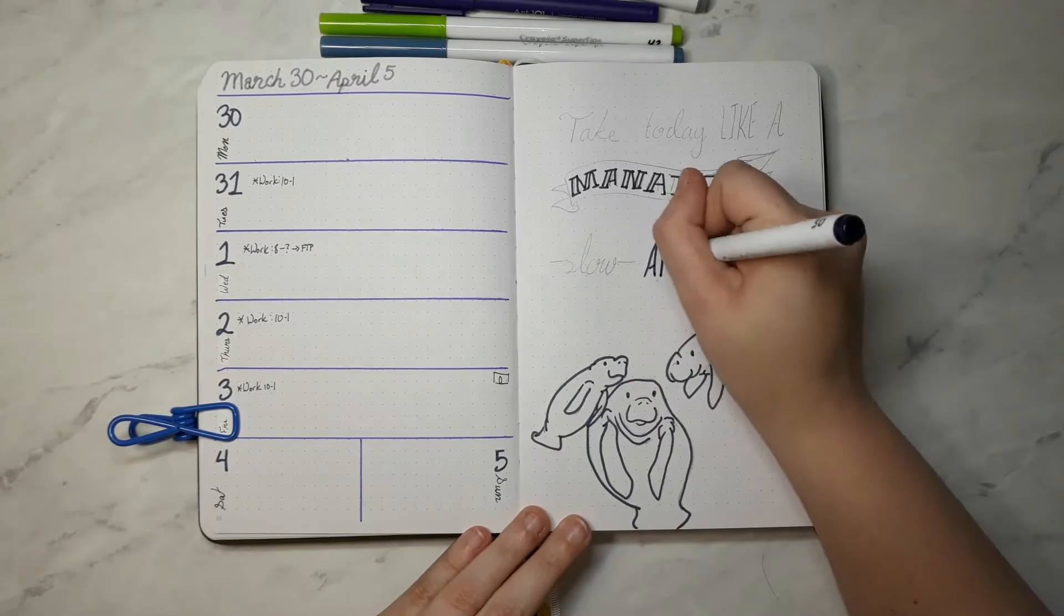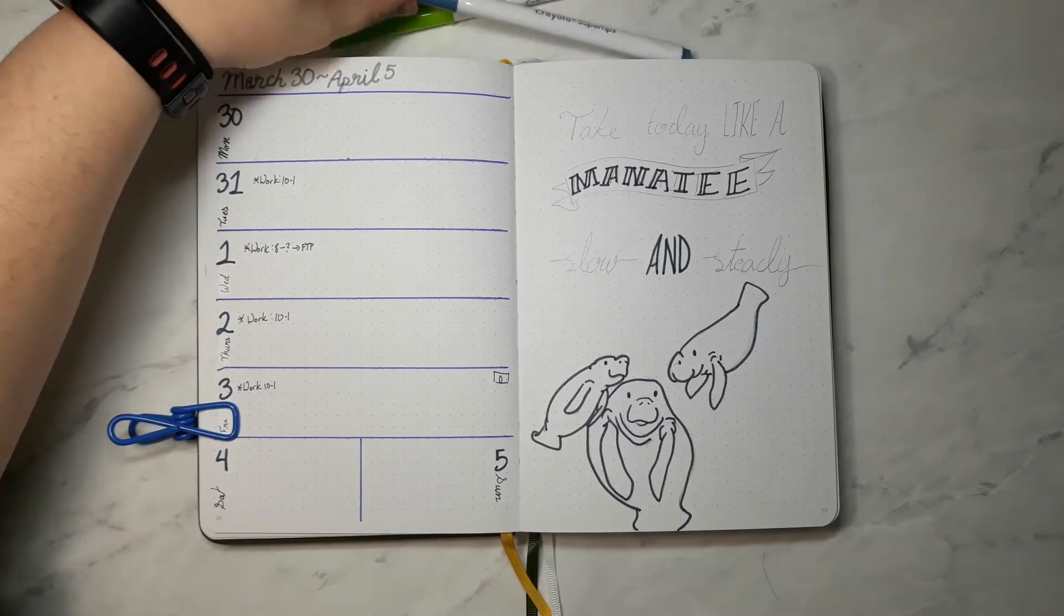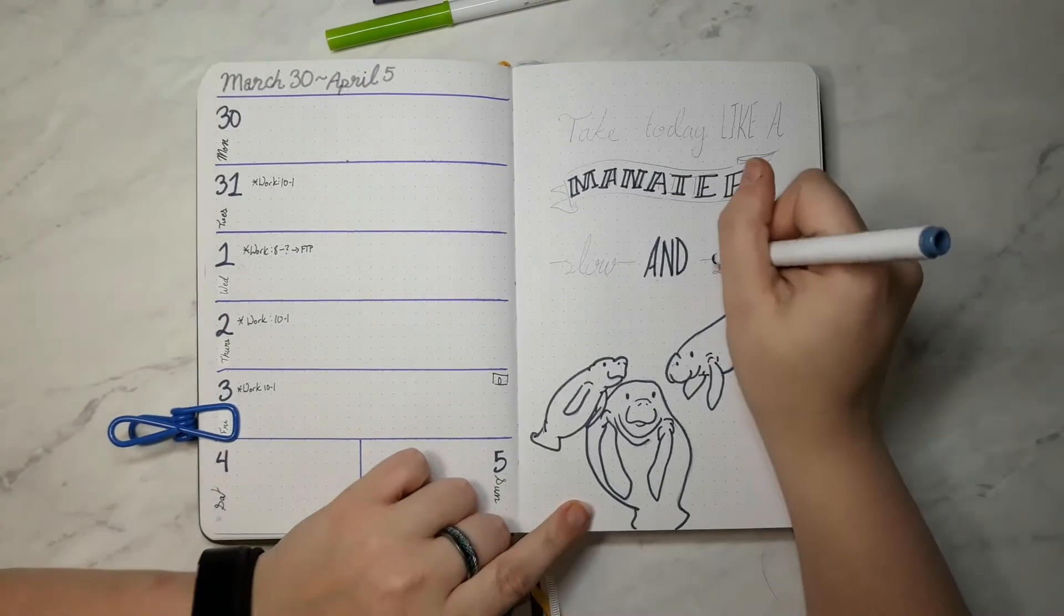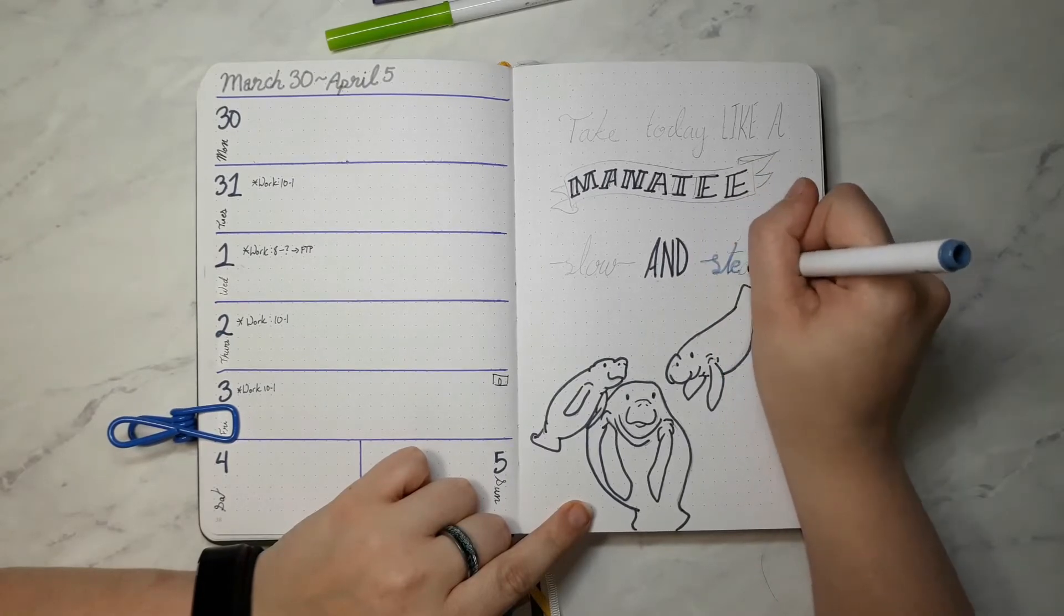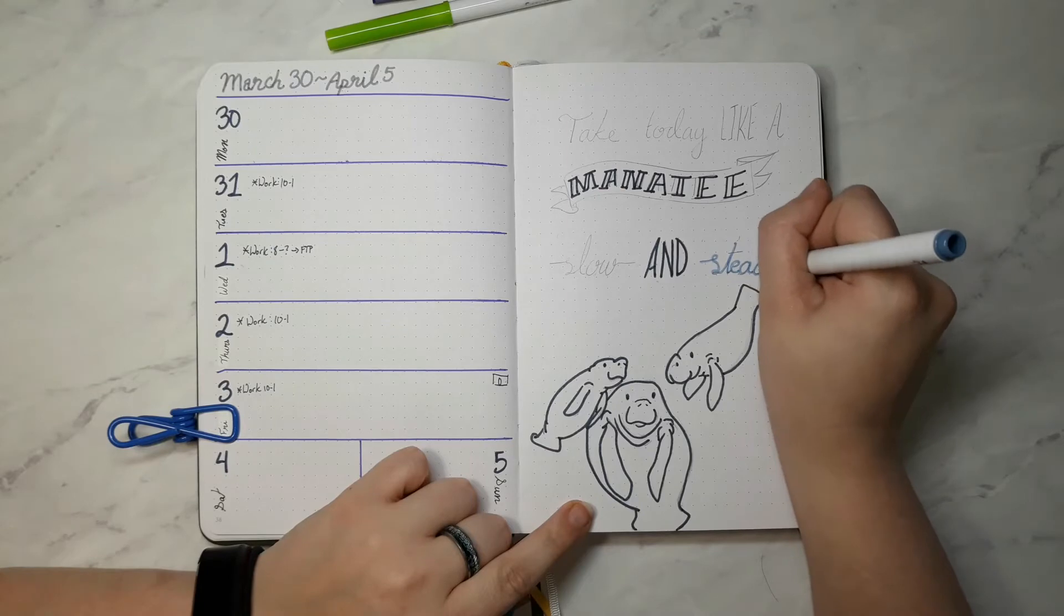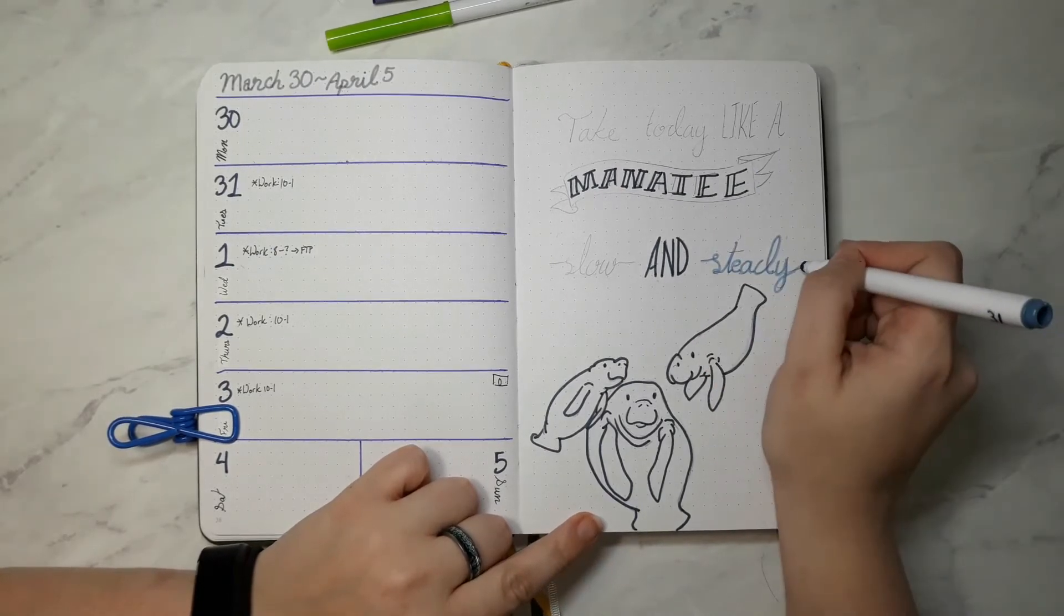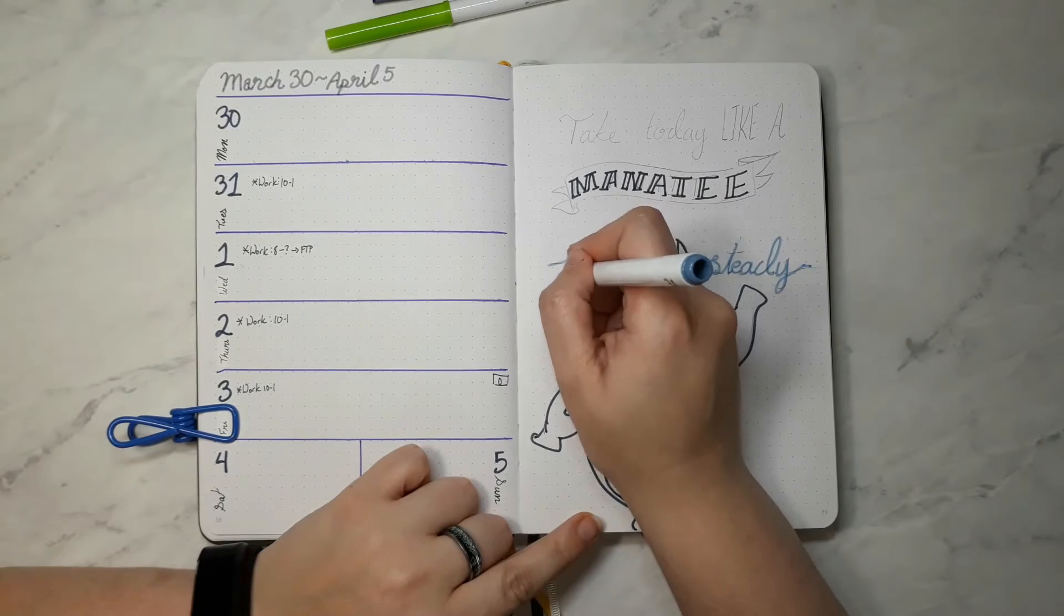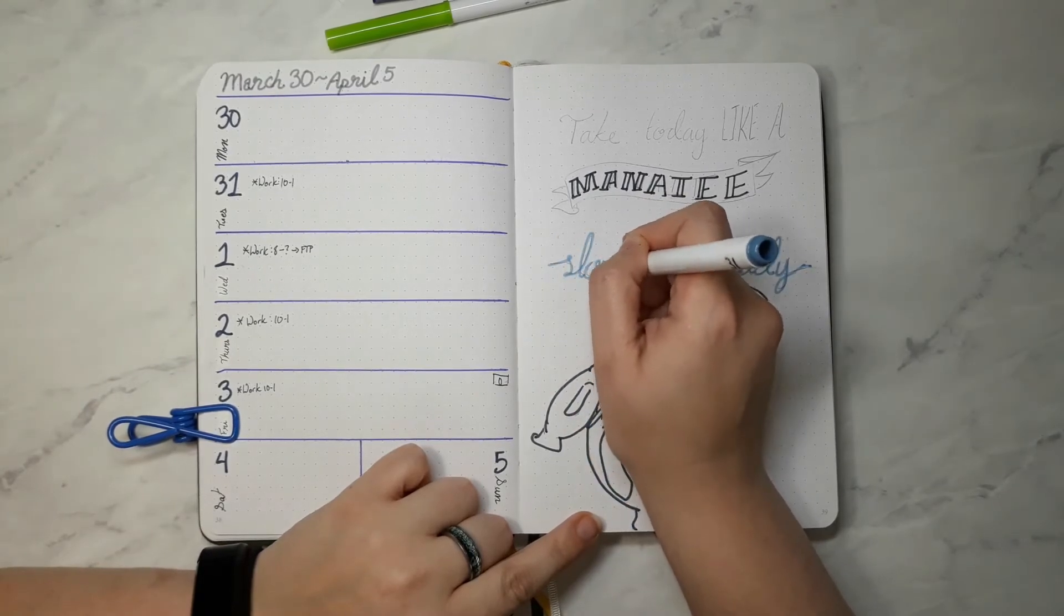The quote I totally made up. I felt like saying take today like a manatee, slow and steady, because with the quarantine stuff and I personally am on administrative leave from my full-time job. Everything has just kind of slowed down, so take it slow and steady. Who better to inspire that than a manatee?